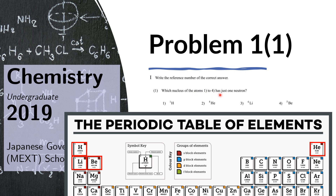The number of neutrons is just the mass number on top minus the number of protons. So this becomes 1 minus 1, giving 0 neutrons. Then 4 minus 2 gives 2 neutrons. Then 6 minus 3 gives 3 neutrons. And 5 minus 4 gives 1 neutron. Therefore, that last atom is the answer.